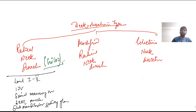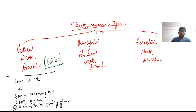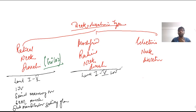If we talk about modified radical neck dissection, this is a radical neck dissection which has been modified in some way. In a modified radical neck dissection, we remove all level 1 to level 5 lymph node stations as in radical neck dissection, but we preserve one, two, or all three of the vital structures. Depending on that, we have three types of modified radical neck dissection.